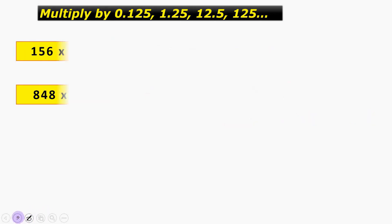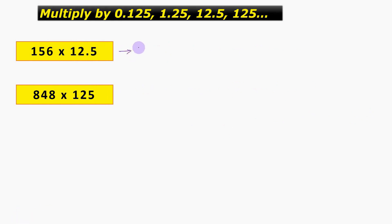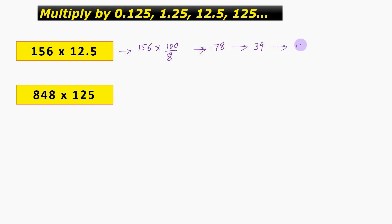For the next question, we have 156 into 12.5. This can be written as 156 into 100 by 8. So, what we do is we divide 156 by 8, getting 78, then 39, then 19.5, and we multiply it with 100, thereby getting the answer as 1950.